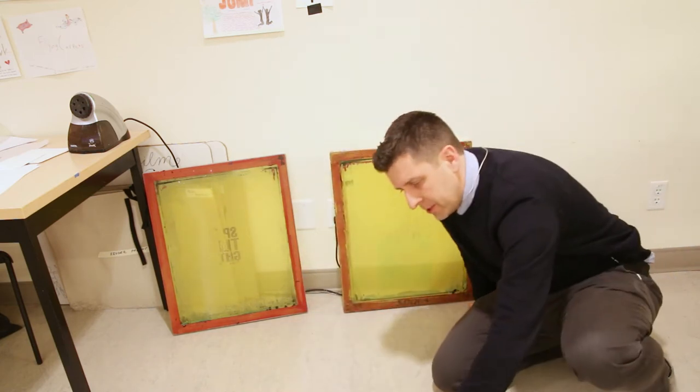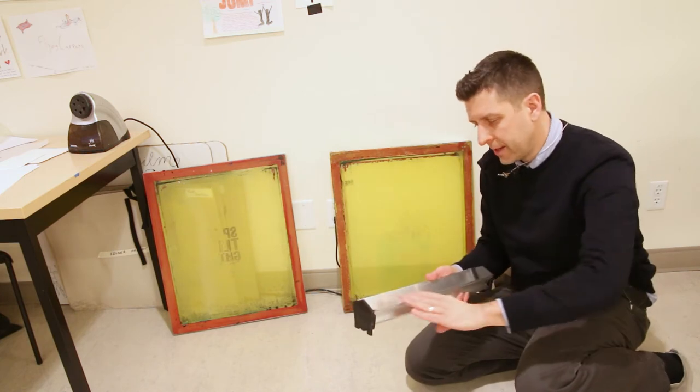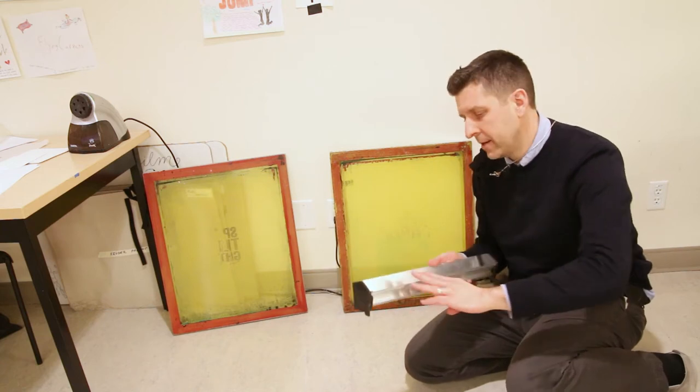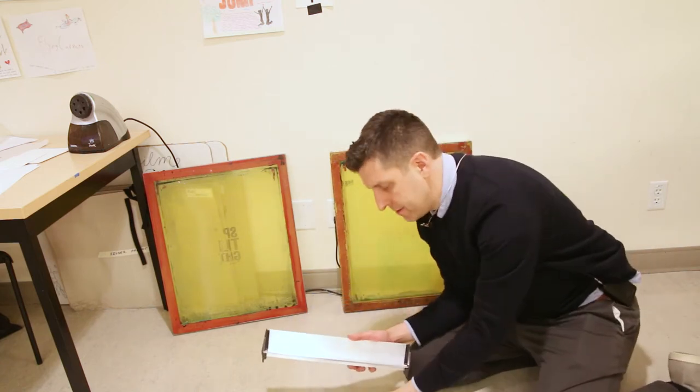First thing we're going to want to do is grab a scoop coater here, check that it doesn't have any bumps or pieces of dirt or anything stuck to it. We want a nice smooth blade here so we can ensure an even coating.